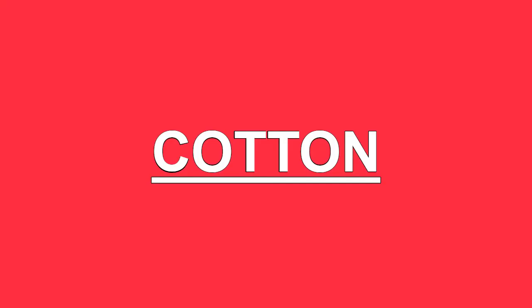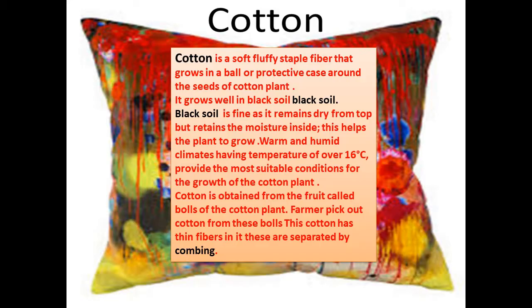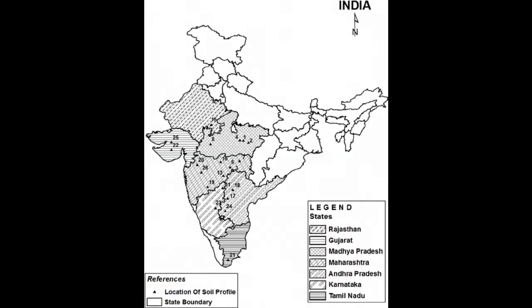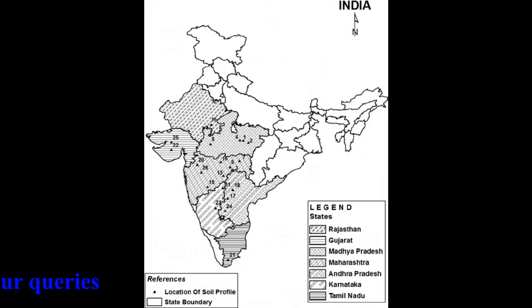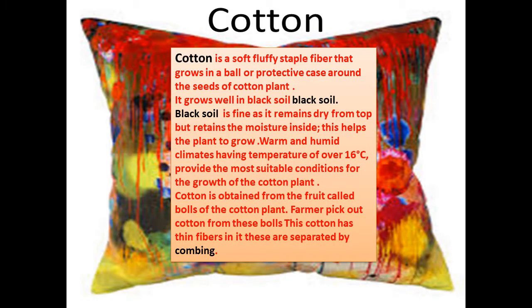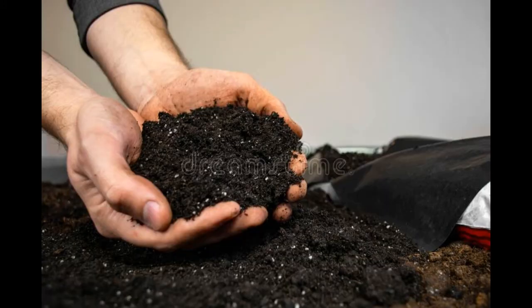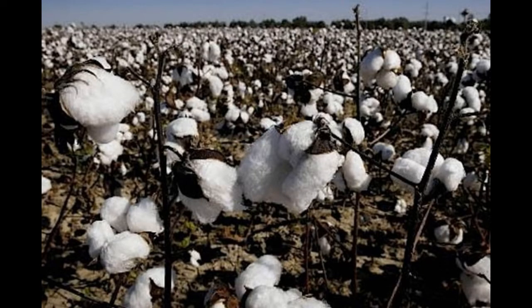Now we will talk about natural fibers in detail. First, cotton — it is obtained from the cotton plant. It is a soft, fluffy staple fiber that grows in a ball or protective case around the seeds of the cotton plant. The best soil for cotton is black soil, found in Gujarat. Black soil retains moisture inside while remaining dry on top, helping the plant grow. Warm and humid climates with temperatures over 16 degrees Celsius provide the most suitable conditions.